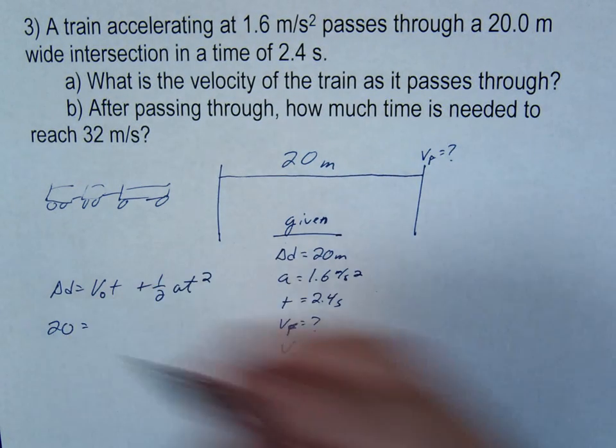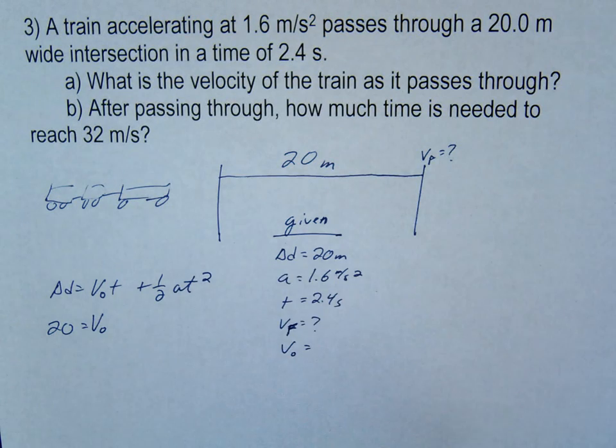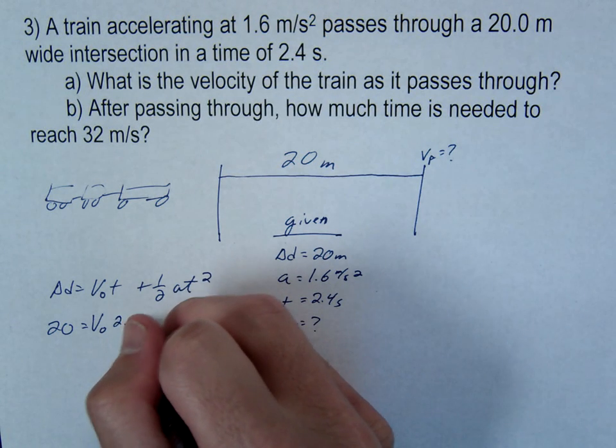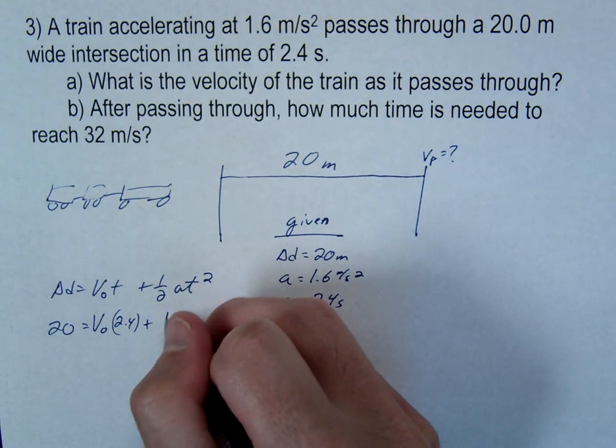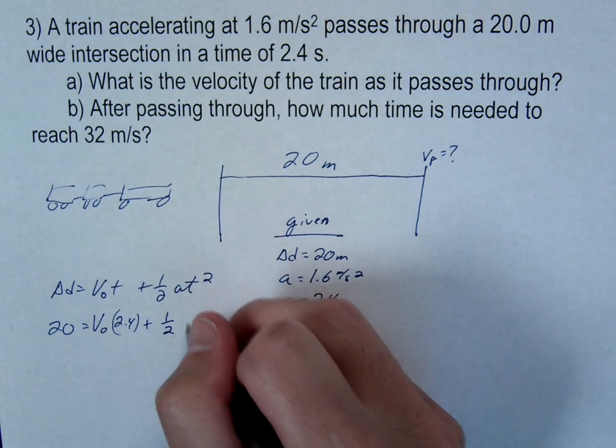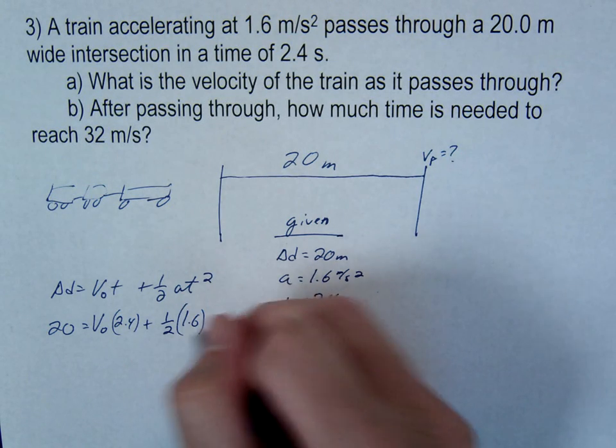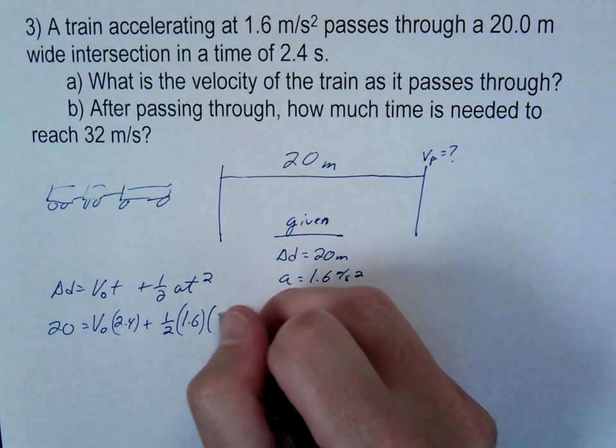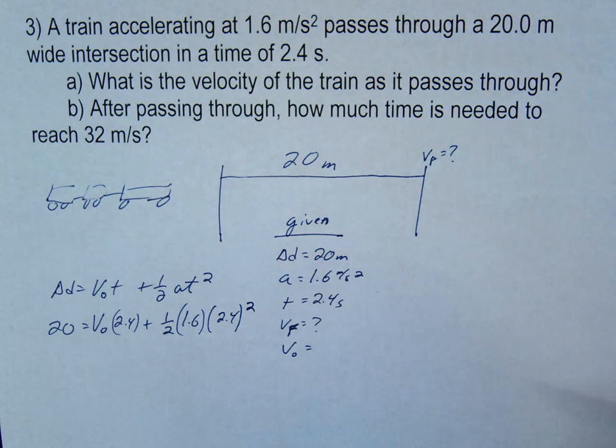So, delta D is 20. The initial is what we want. Time was 2.4, plus one-half, 1.6. T squared was 2.4.